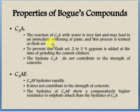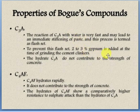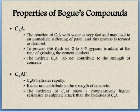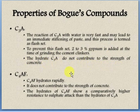Flash set means the cement sets very fast — the paste becomes hard immediately. To prevent this flash set, 2–3% gypsum is added at the time of grinding of the cement clinkers. Without gypsum, cement would set within one or two minutes of adding water, making it very difficult to handle. The hydrated C3A does not contribute to the strength of concrete — it only affects setting time.